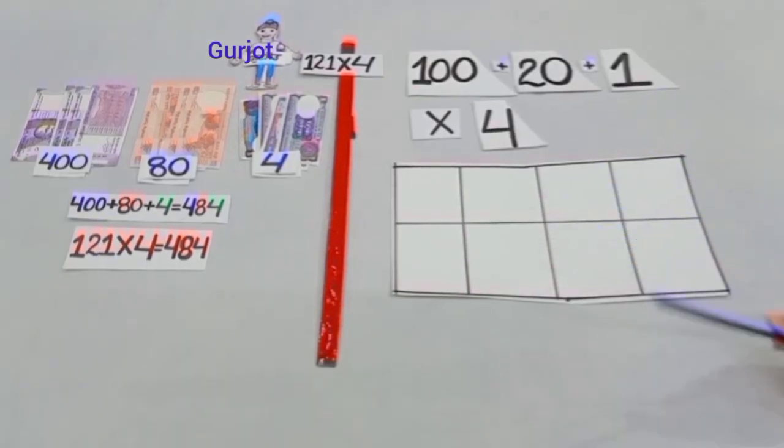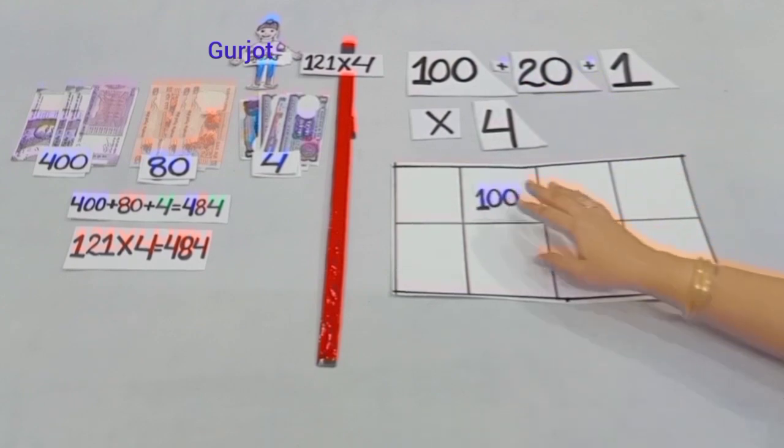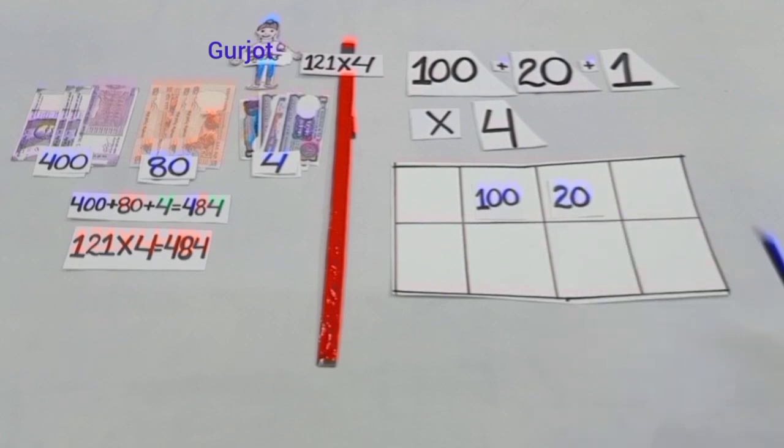Students, here we have, firstly 100, so we will write 100 here. Now, next we have 20 and we will write 20 here and the next digit is 1 and we will write 1 here.